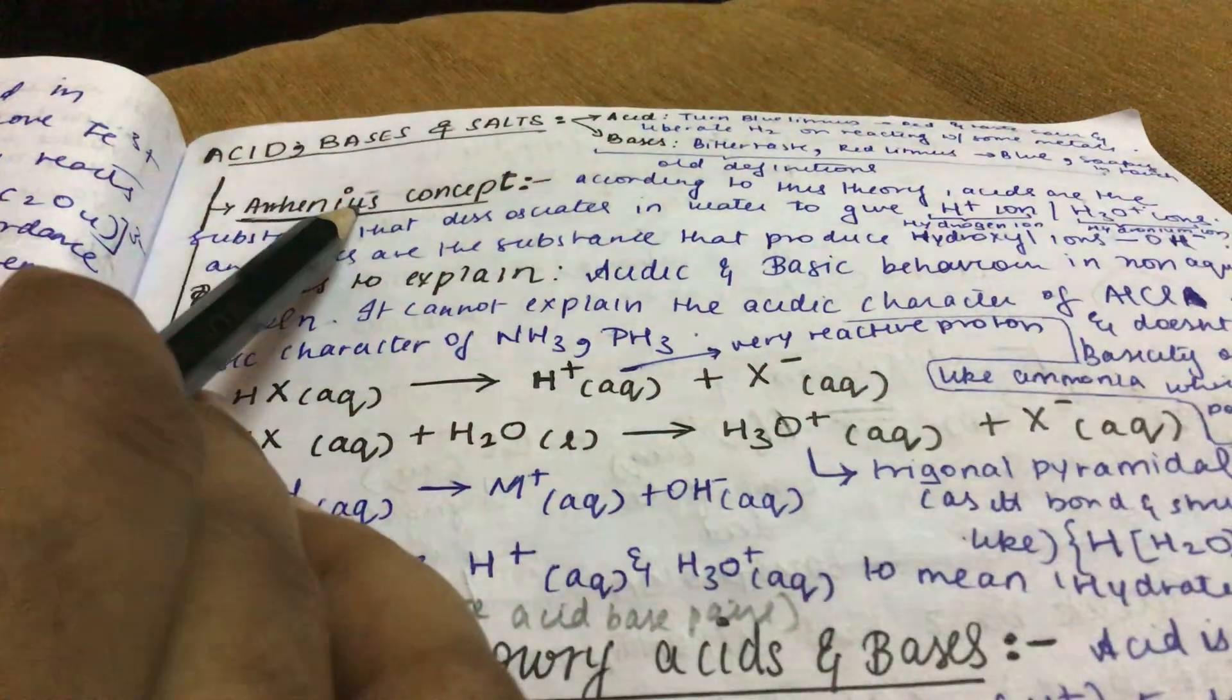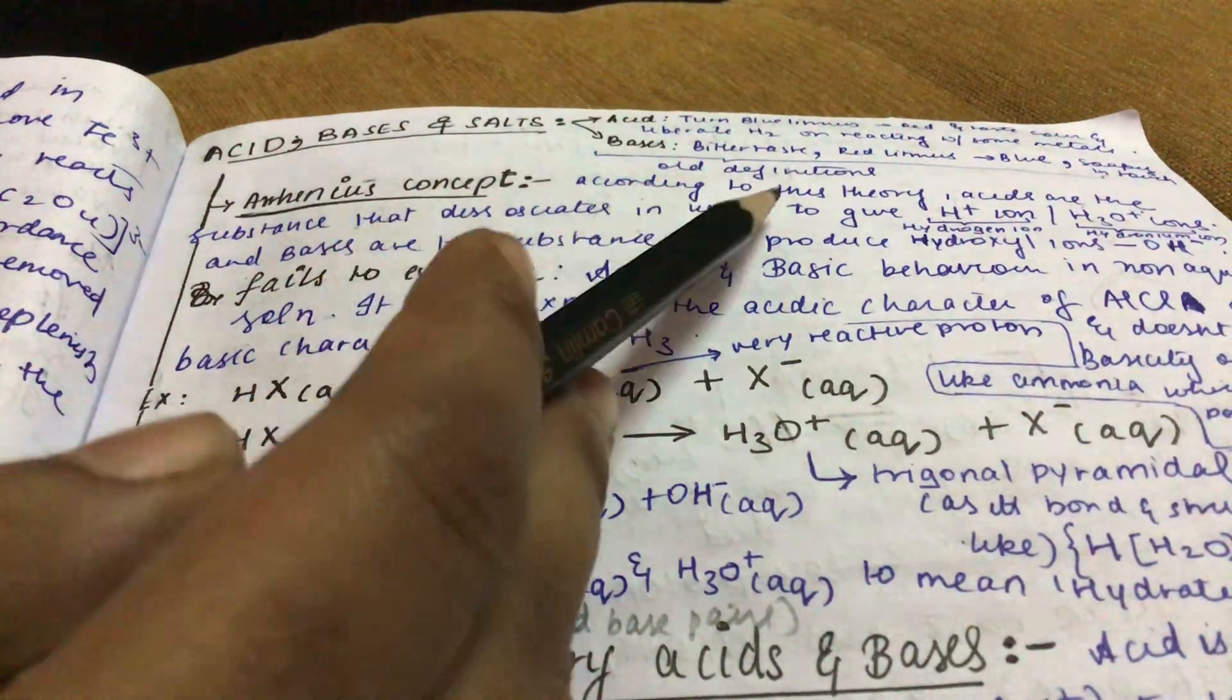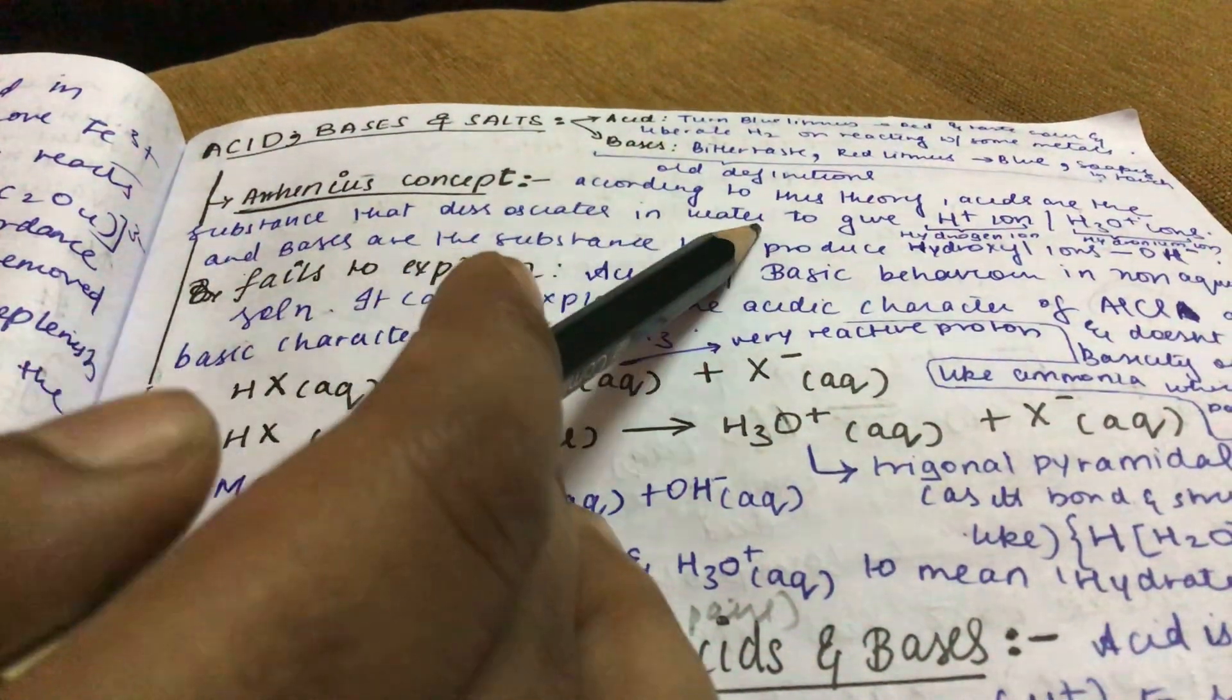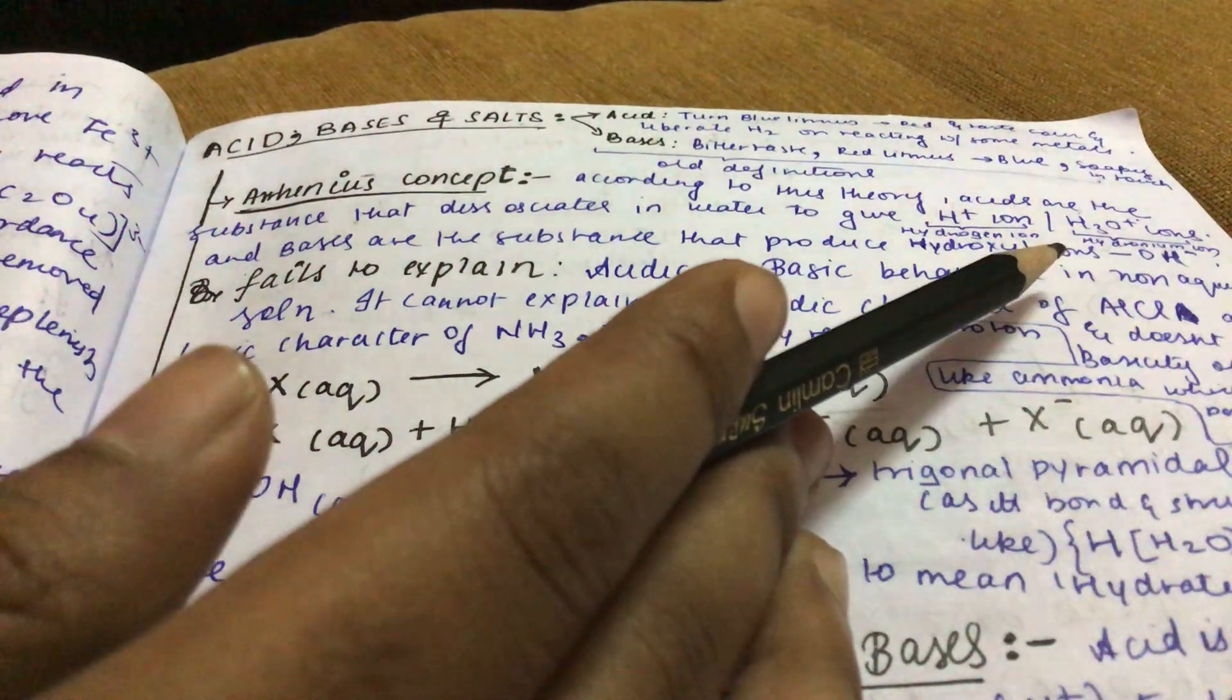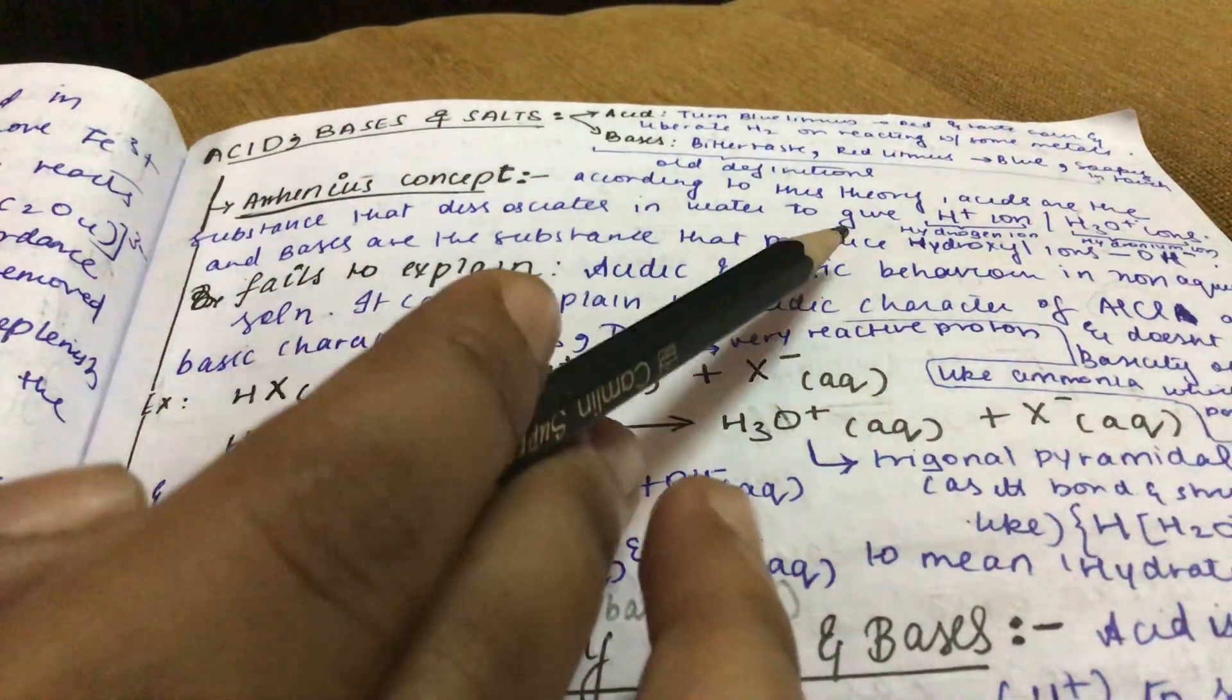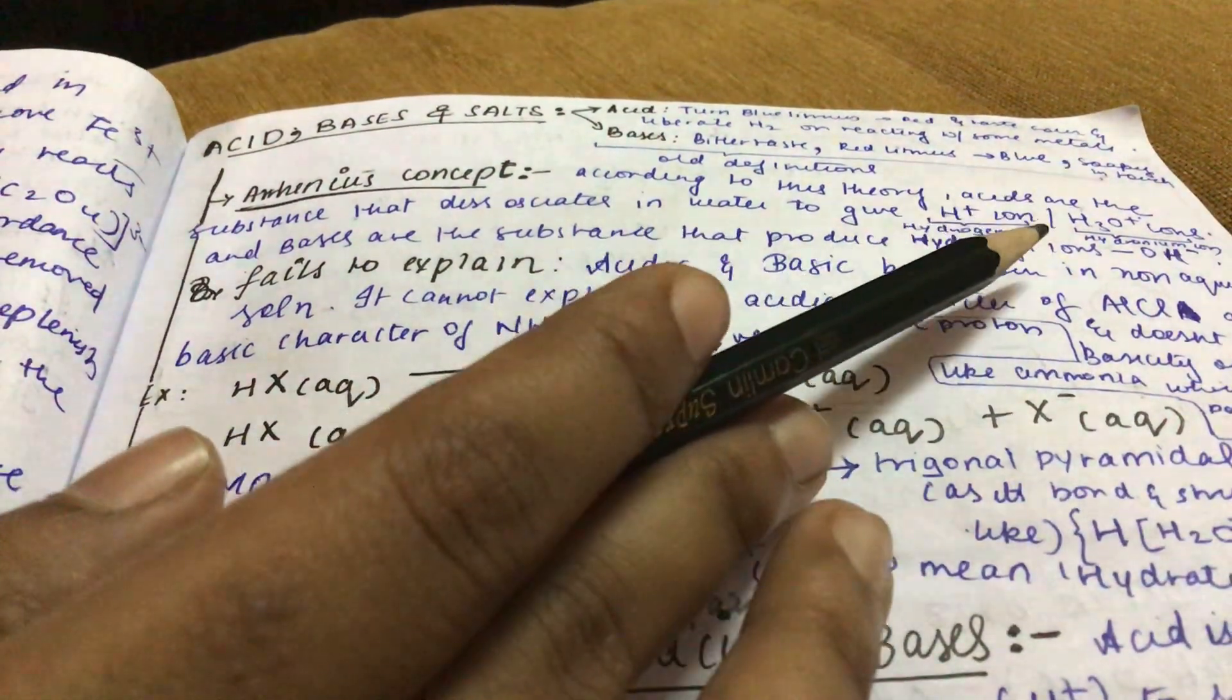The new definitions are based on Arrhenius concept. According to this theory, acids are substances that dissociate in water to give H plus ions or H3O plus ions. Bases are substances that produce hydroxide ions or OH minus ions.